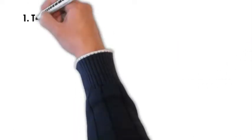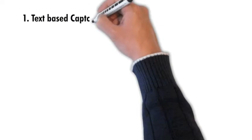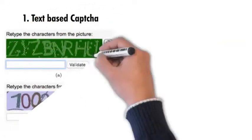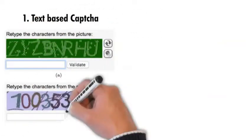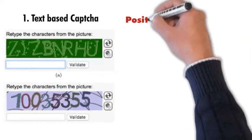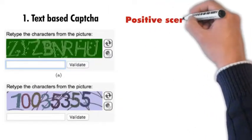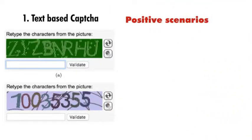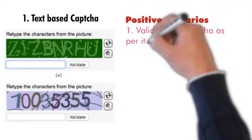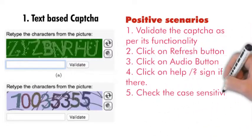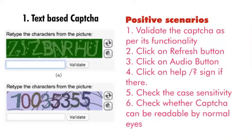Let's check out all the test scenarios of these CAPTCHAs one by one. First one is text-based CAPTCHA. Let's check the positive scenarios. The first positive scenario is: validate the CAPTCHA as per its functionality — whatever text is given in that CAPTCHA, you enter it as-is and click on validate.